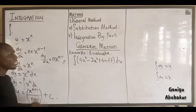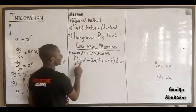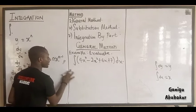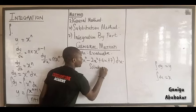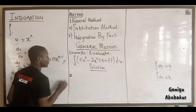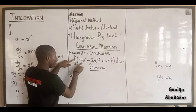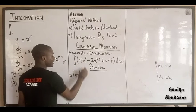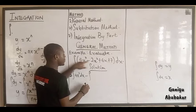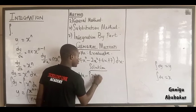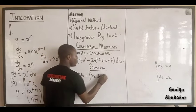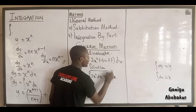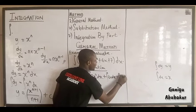Our first step is to split the integral across each term and attach dx to it. That gives us: the integral of 4x cubed dx, minus the integral of 2x squared dx, plus the integral of 6x dx, plus the integral of 7 dx.